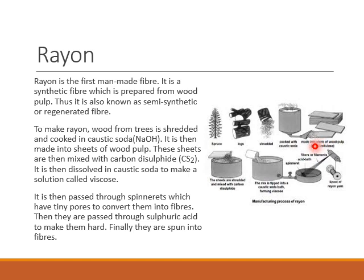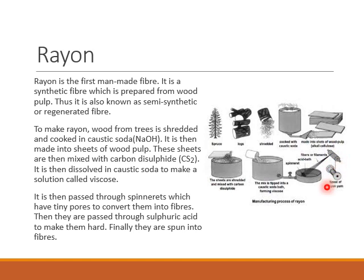These wood pulp sheets are again shredded and mixed with carbon disulphide (CS₂). The mixture obtained is then dissolved in caustic soda to prepare a solution called viscose. This viscous solution is then passed through spinnerets — which are like shower heads with tiny pores — converting the viscose into fibers. These fibers are dipped in an acid bath filled with sulfuric acid, which makes the fiber hard, and finally these fibers are spun to make fabric.